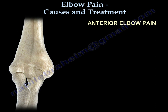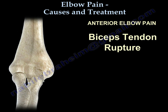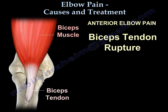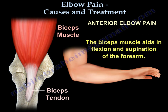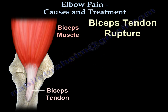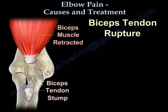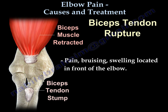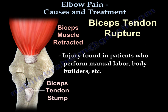Anterior elbow pain: biceps tendon rupture. The biceps muscle inserts into the radial tuberosity below the elbow. The biceps is an important muscle that helps in elbow flexion and supination of the forearm. When the biceps tendon ruptures distally, the muscle retracts upward, causing pain, bruising, and swelling in front of the elbow. This injury is found in patients who perform manual labor and bodybuilders.